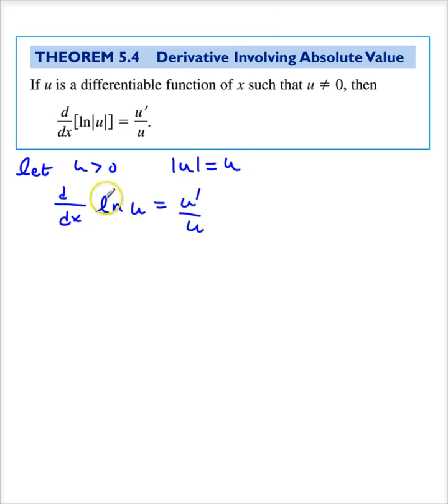And this is the one that gets people. What happens when u is negative? Then the absolute value of u is equal to minus u.